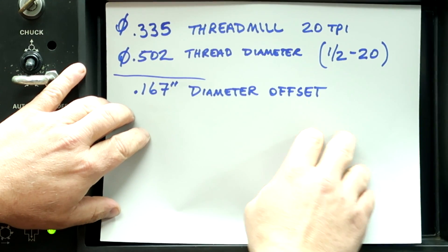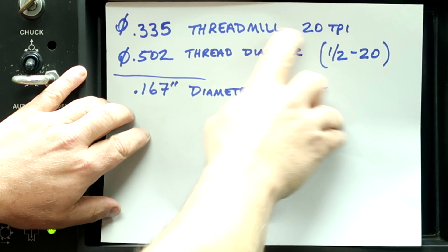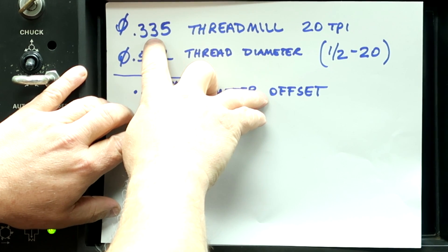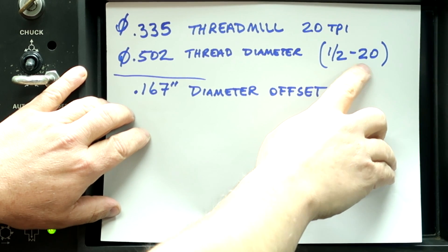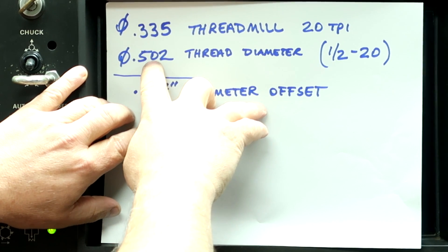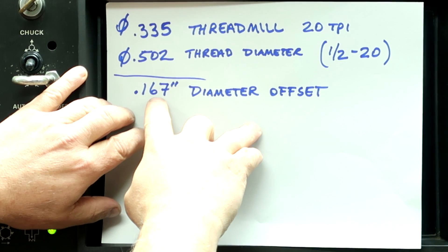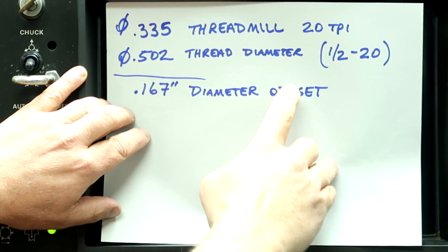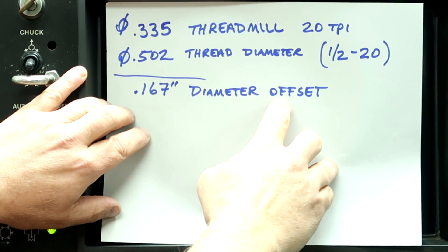Here's what we're going to be working with. We're going to be using a thread mill with 20 threads per inch, and it's 335 thousandths in diameter. We're going to be cutting an internal half-20 thread. I'm going to go to 502 for the major diameter of the thread, and that leaves us with a difference of 167 thousandths for the diameter offset. On this older machine, when you program in a manual process, it still uses the diameter values — it's not a radius value.